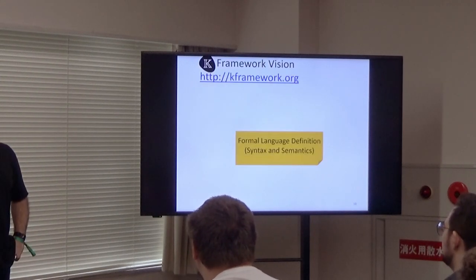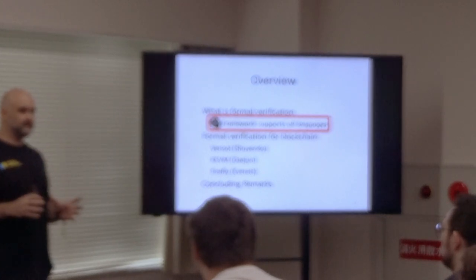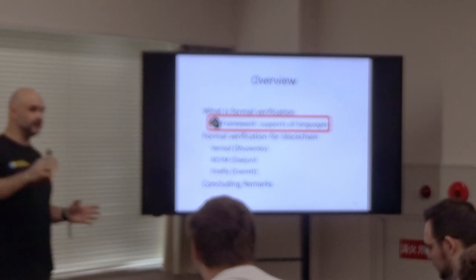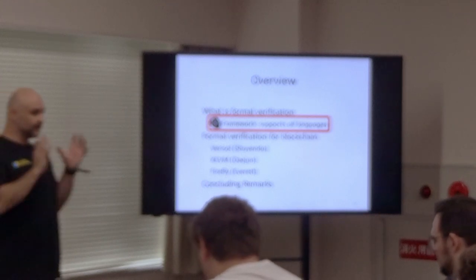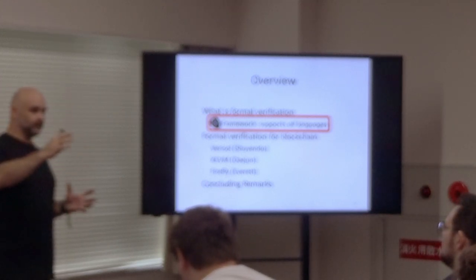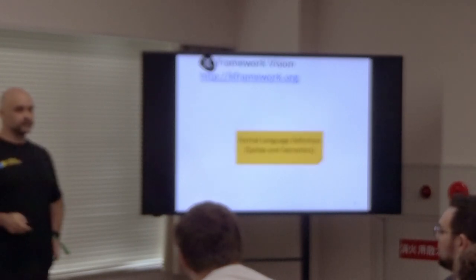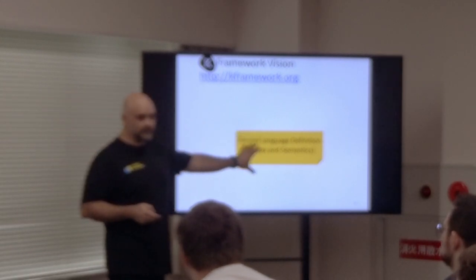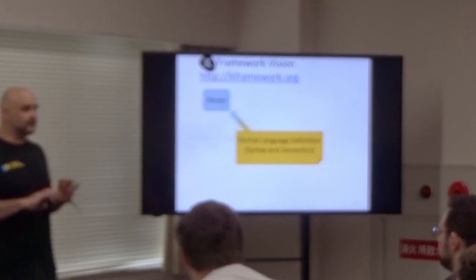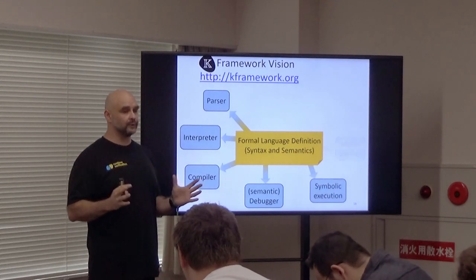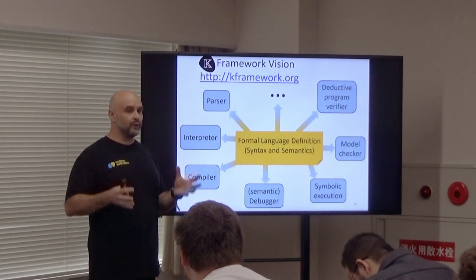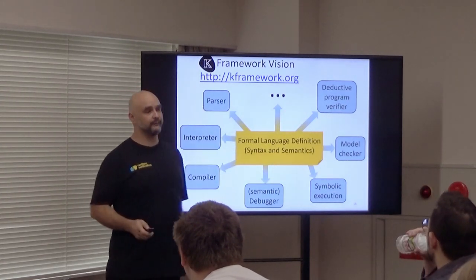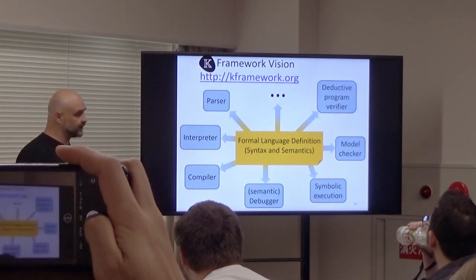Now for our approach based on the K framework. We like K mainly because it supports all languages — it is designed to work with all programming languages and in particular all versions of any particular language. The philosophy underlying the K framework is that you should define a programming language once and for all, with a formal language definition that includes syntax, semantics, and everything. All tools you need for that language — parsers, interpreters, symbolic execution engines, model checkers, deductive program verifiers — should be derived automatically or semi-automatically from that one definition.